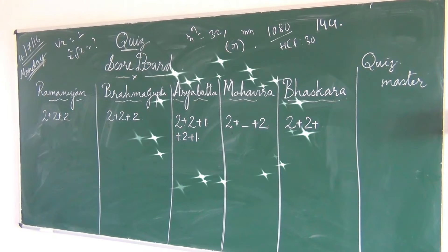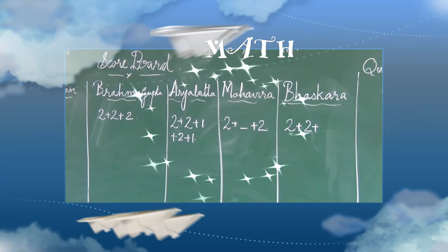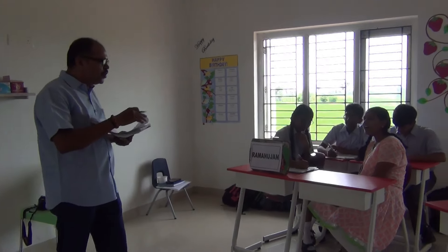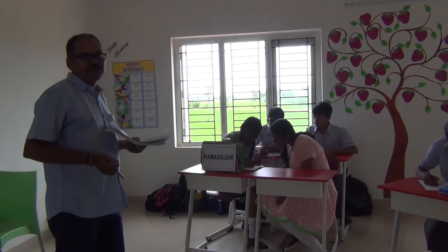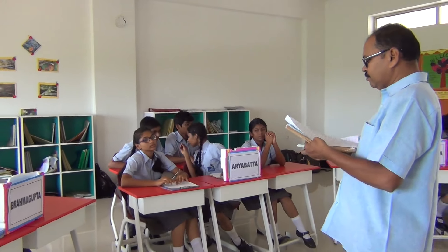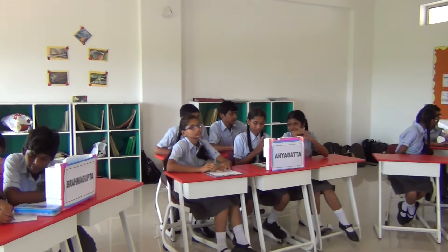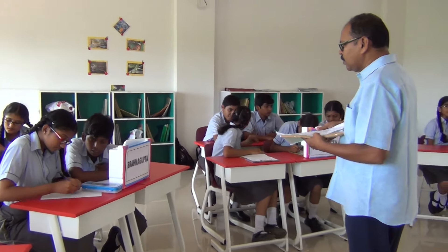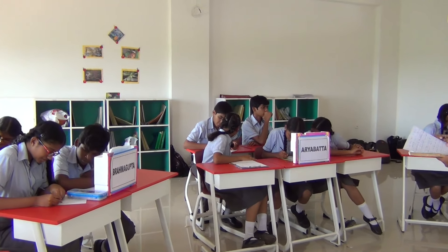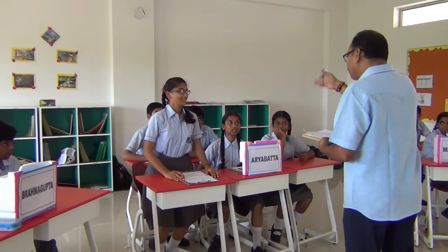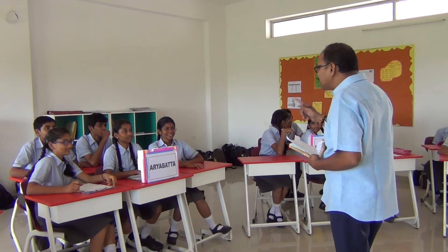The approximate value of root 3 up to 3 decimal points is 1.732. Very good, correct. If root x equals 3, the value of x root x. Very good.